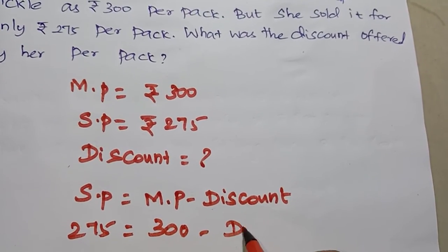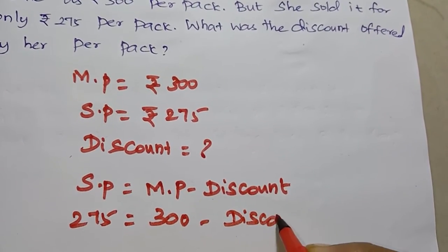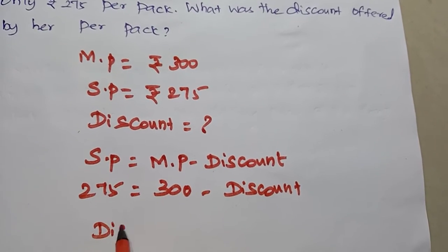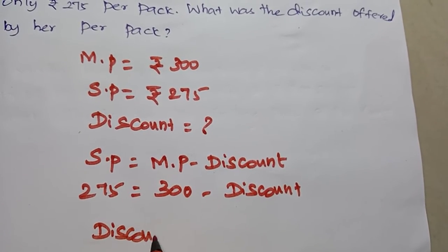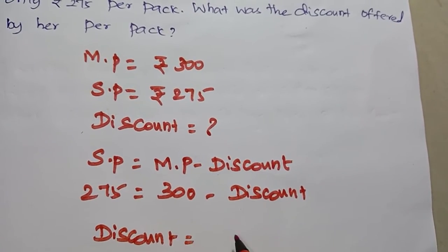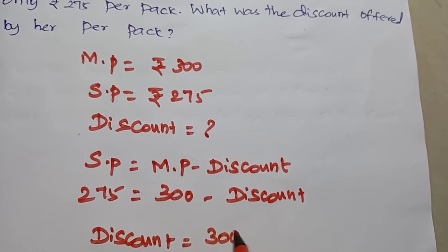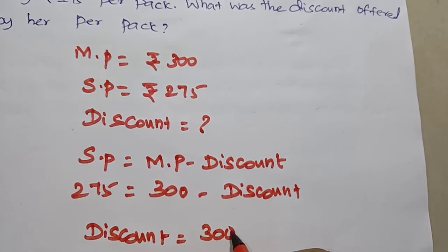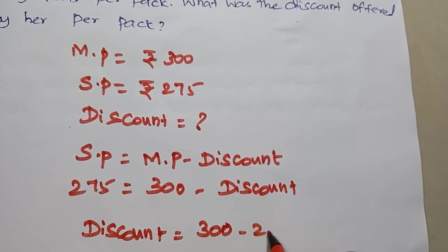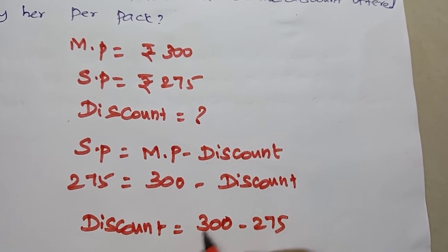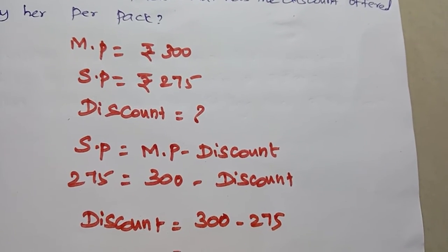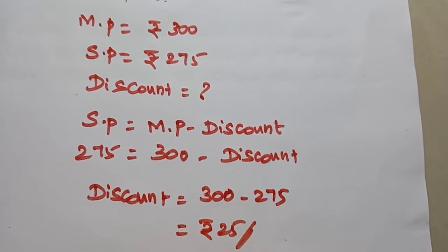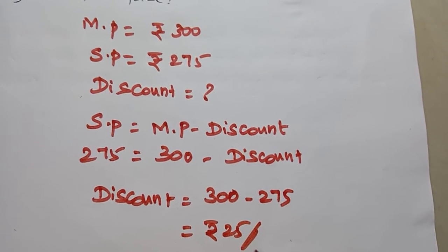Minus discount — find discount. So discount = 300 minus 275 = Rs. 25. That is the answer. Discount available is Rs. 25.